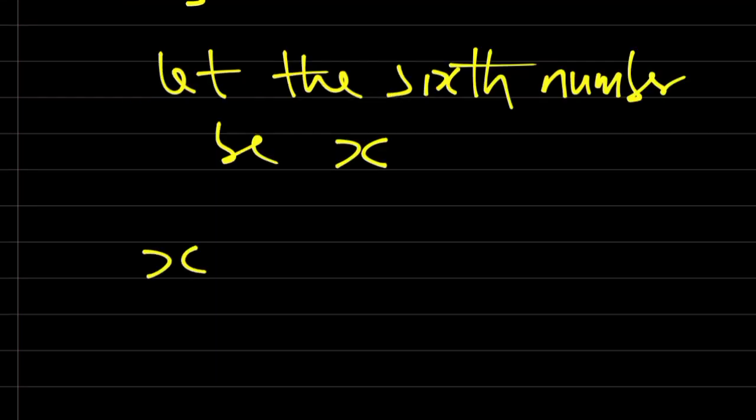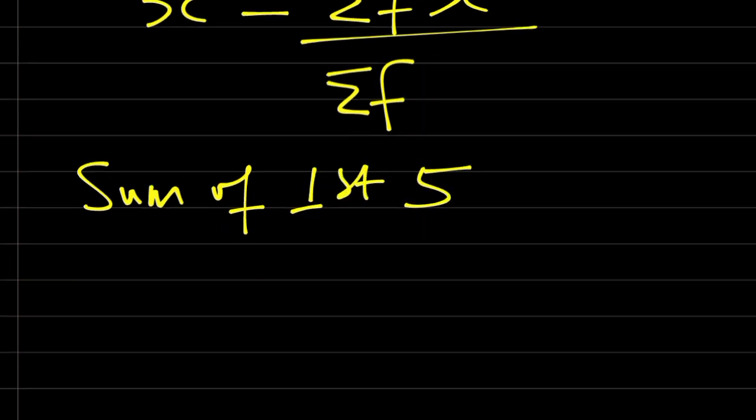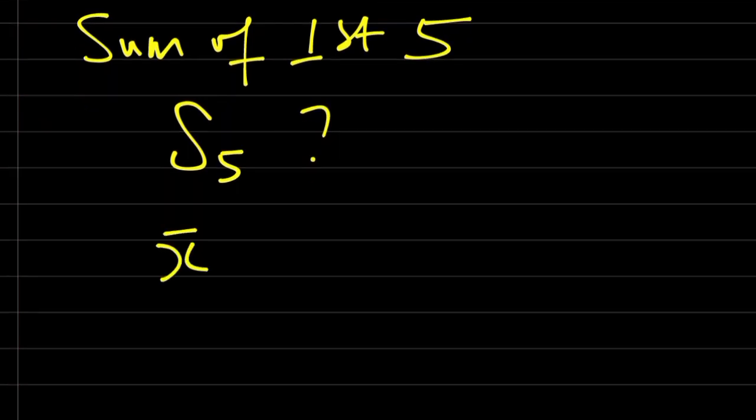Don't forget the formula for mean. Mean is equal to the summation of all the numbers divided by the count. Therefore, the sum of the first five numbers - let me represent it with S5. The mean of the first five numbers will be equal to their sum over 5, since there are 5 numbers.